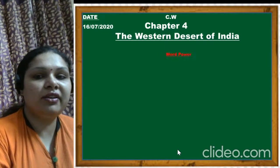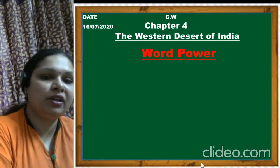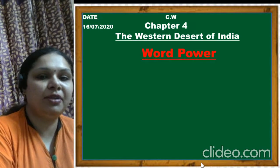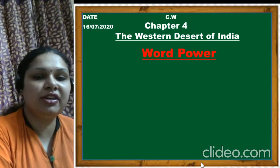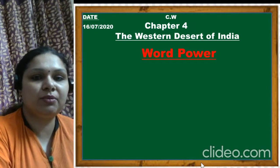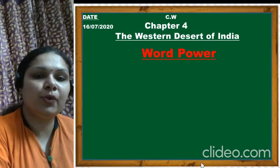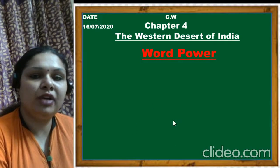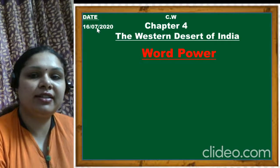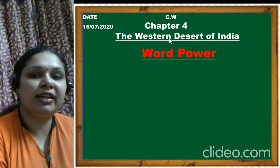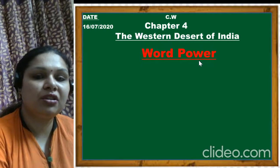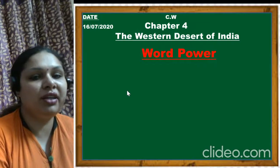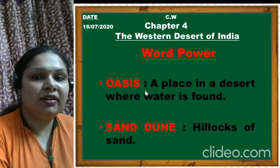Now students, we have completed the explanation of the chapter and discussed all the topics. You have to read the chapter and note down any queries in a rough notebook to ask in the online class. Take out your notebook and write the date 16/7/2020, classwork, Chapter 4 - The Western Desert of India, and then Word Power.